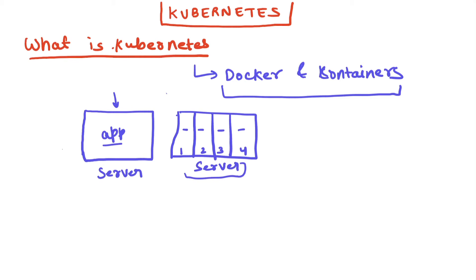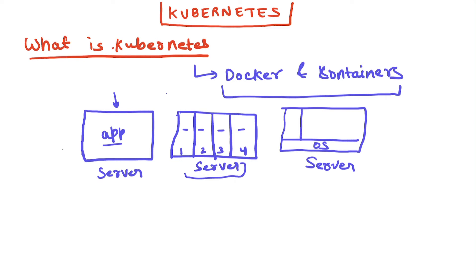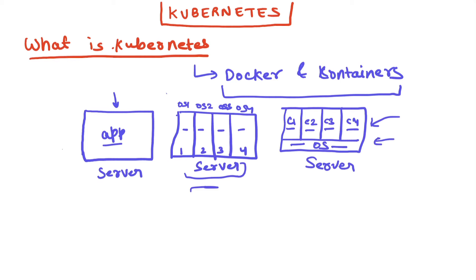After VMs, the approach of containers came into picture. With containers, a server can have just one operating system, and on top of that single OS you can run multiple containers. In the VM approach, every VM has its own OS, eating up lots of memory and resources. Containers are lightweight because they don't have their own OS — they use the underlying OS of the server only.